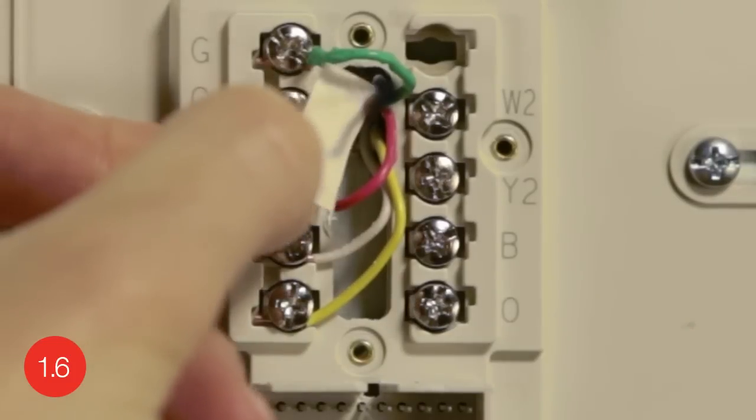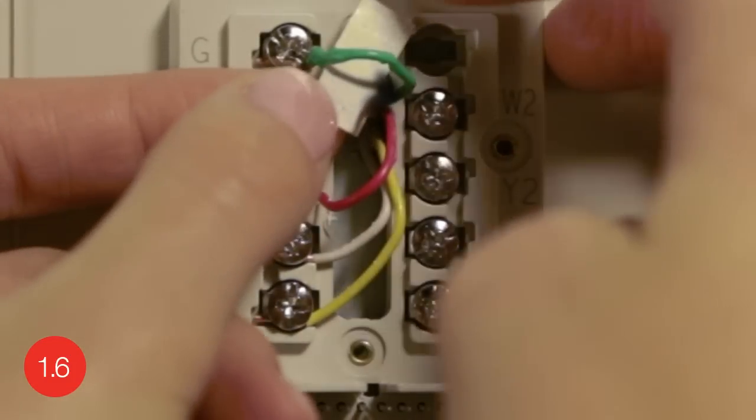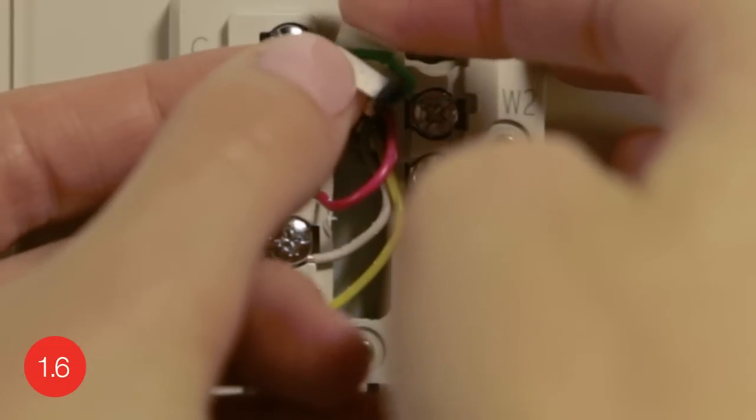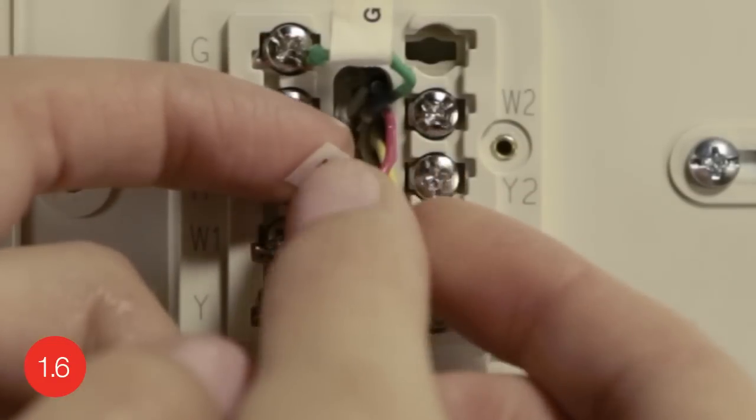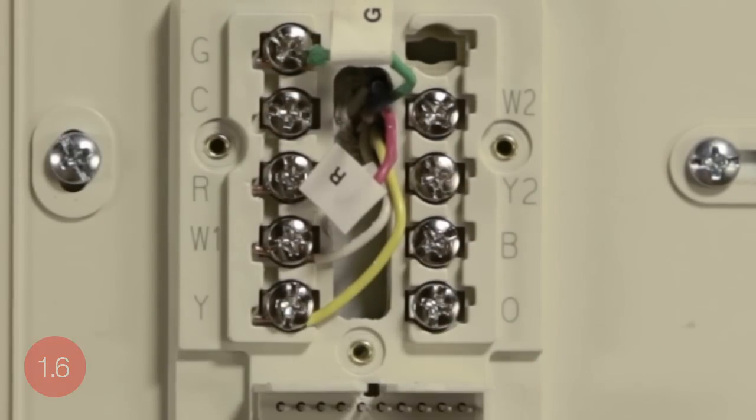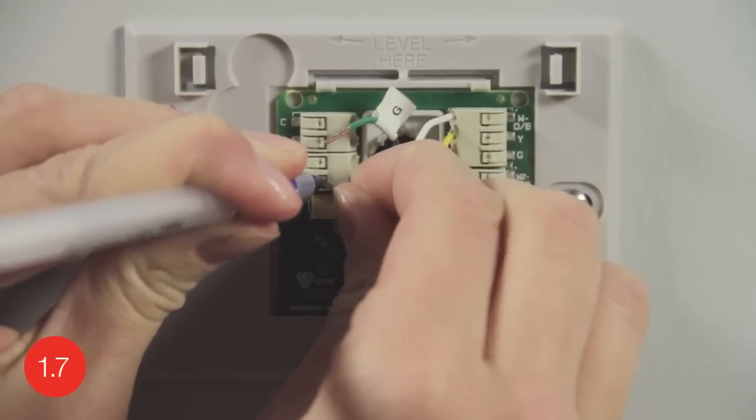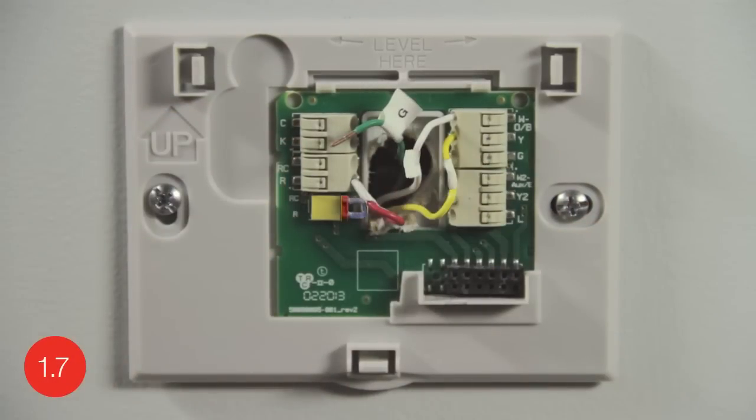Since you determined earlier that you have a gas, oil, or propane system and you have a wire labeled G, you can use your G wire as your C wire to provide the required power to your thermostat. To do this, connect all wires to their designated letter terminals at your wall plate, except the wire labeled G.